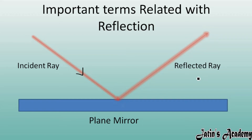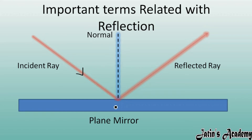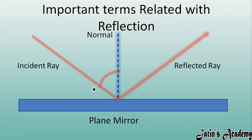Next, the perpendicular drawn at the plane mirror or any surface is known as the normal. It lies between the incident ray and the reflected ray. Normal is just an imaginary line — it is not a ray, so no arrow sign is used for the normal.